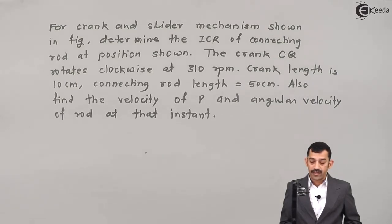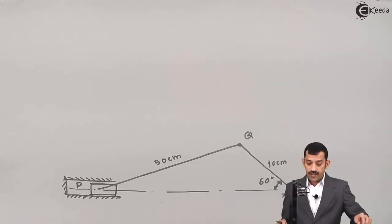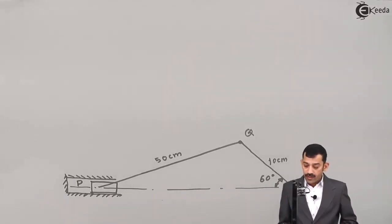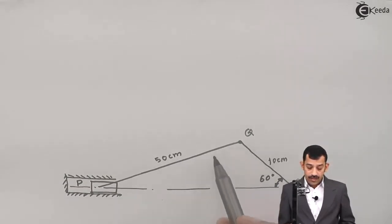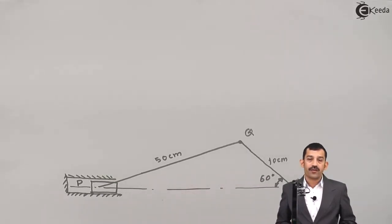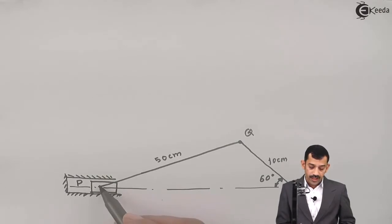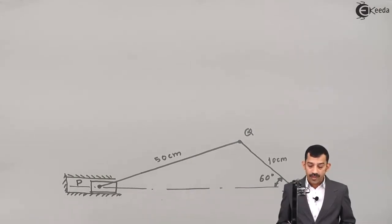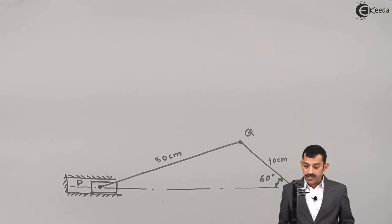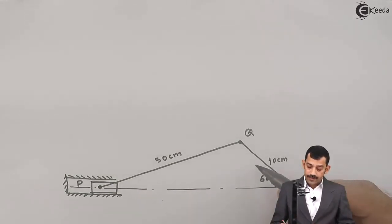From the figure, OQ is a crank inclined at 60 degrees with the horizontal. Link PQ is the connecting rod with length 50 cm. Connecting rod PQ rotates about its instantaneous center of rotation because it doesn't rotate about any hinge support, but crank OQ rotates about hinge support O. Therefore, crank OQ performs pure rotational motion.